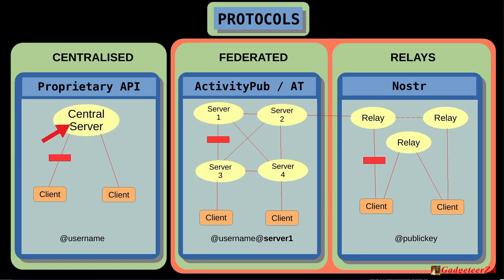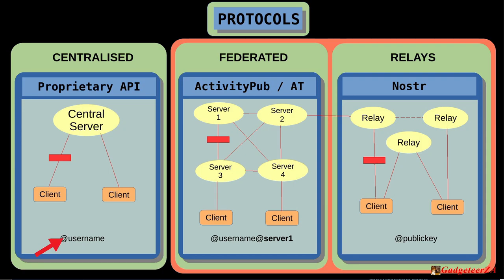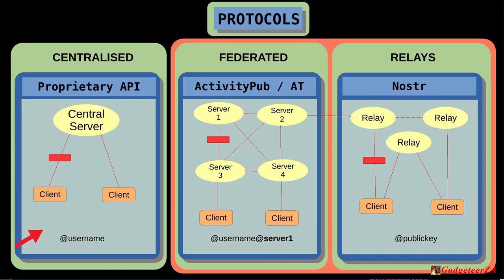On centralized networks your identity is a very simple '@username' registered on their server. If you're blocked or they reallocate your name, you've lost it — you can think of it as '@username@Twitter.com.' On more decentralized federated networks using ActivityPub — the Fediverse — you have a federation of servers. This could be one Mastodon server, another Mastodon server, a Pixelfed server, a Hubzilla service, and so on, all federating amongst each other.